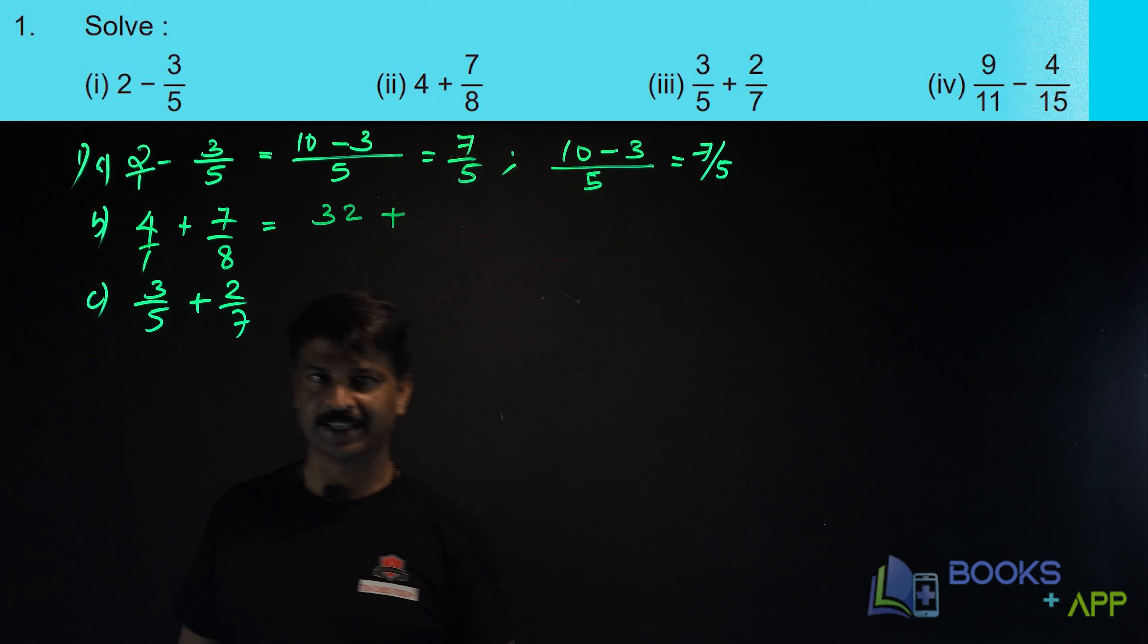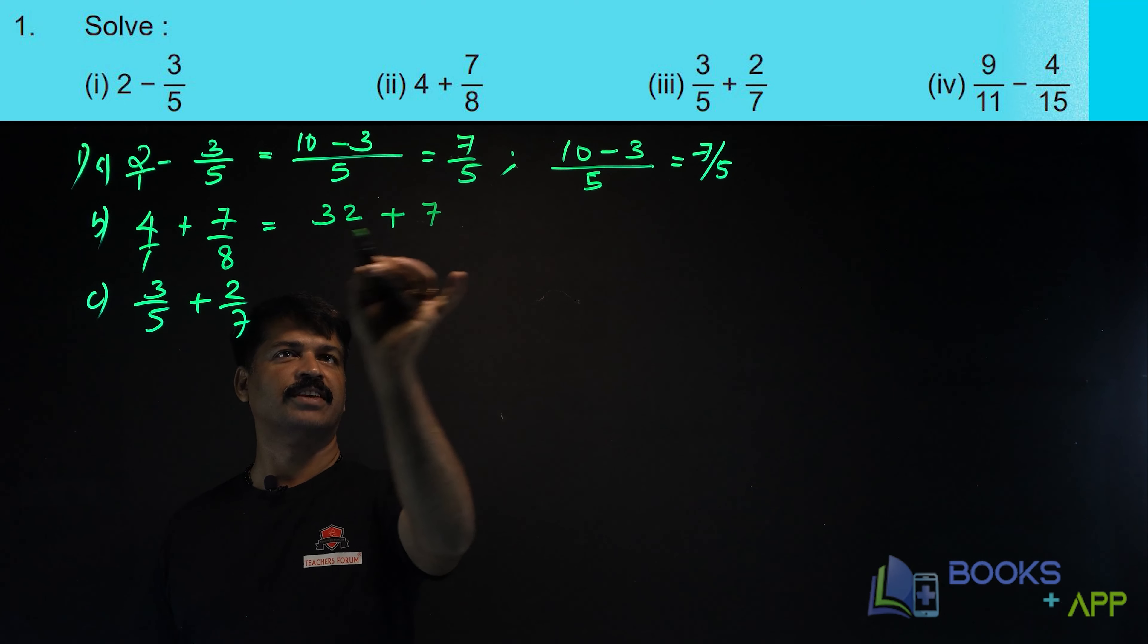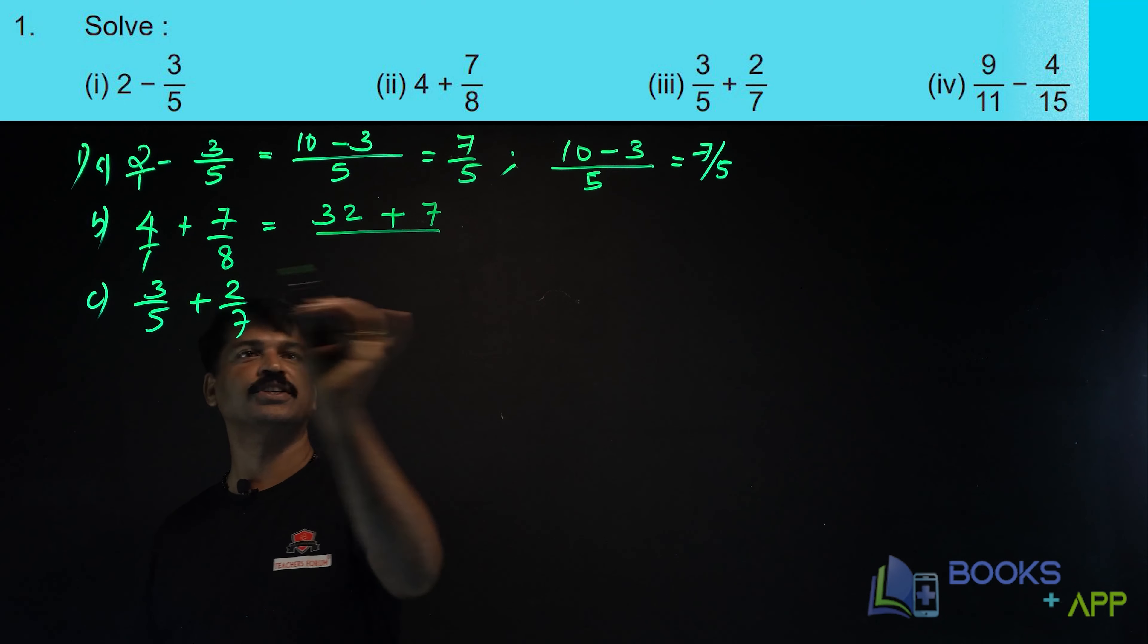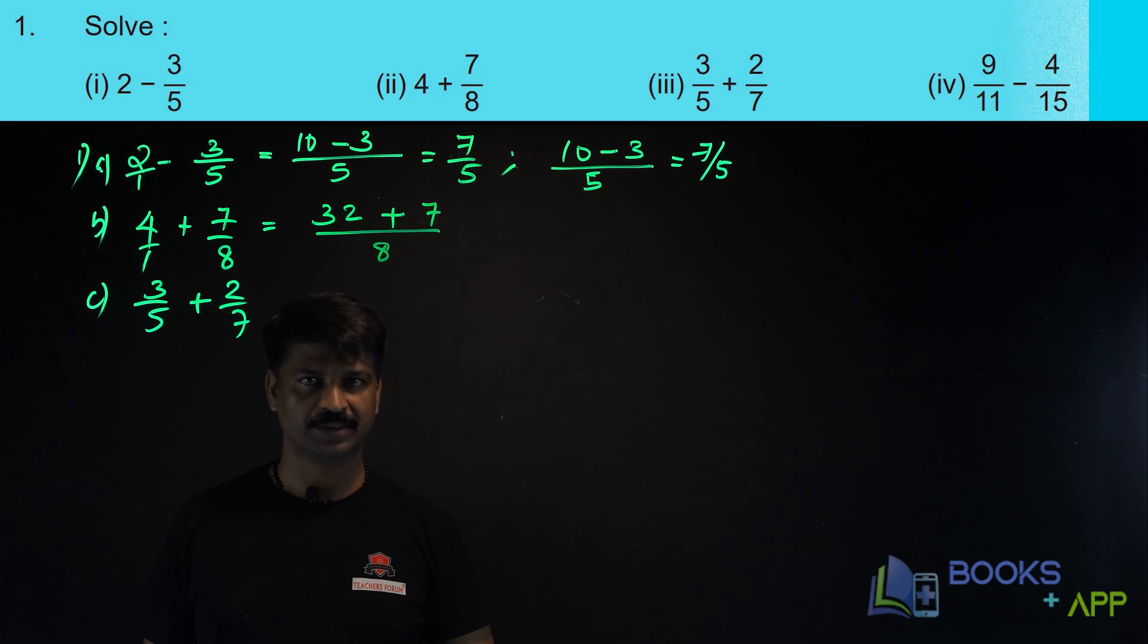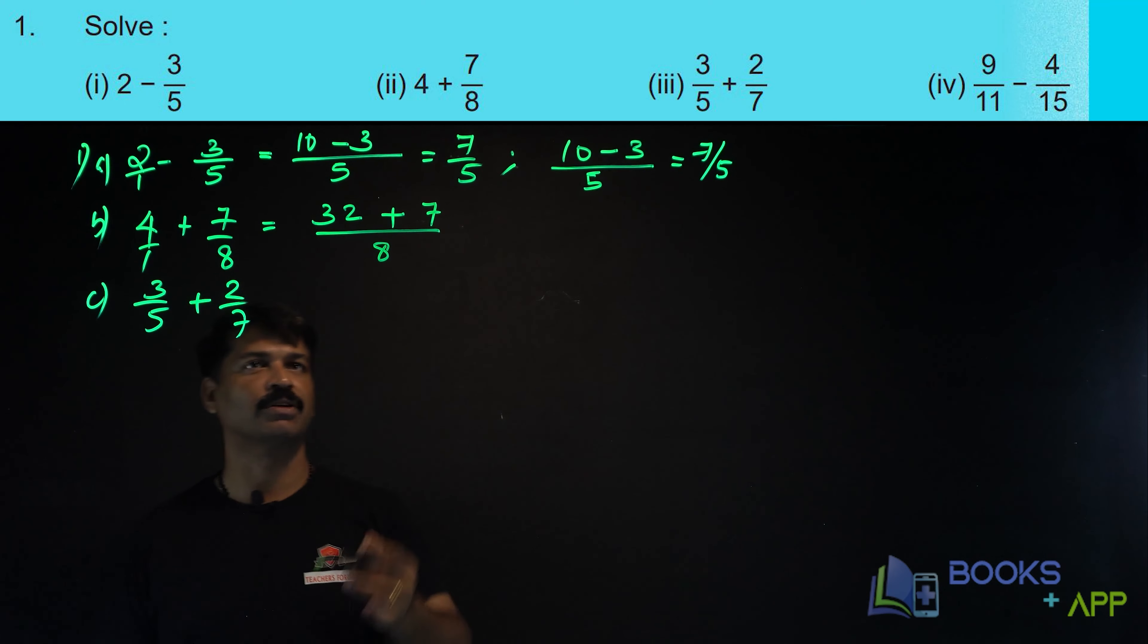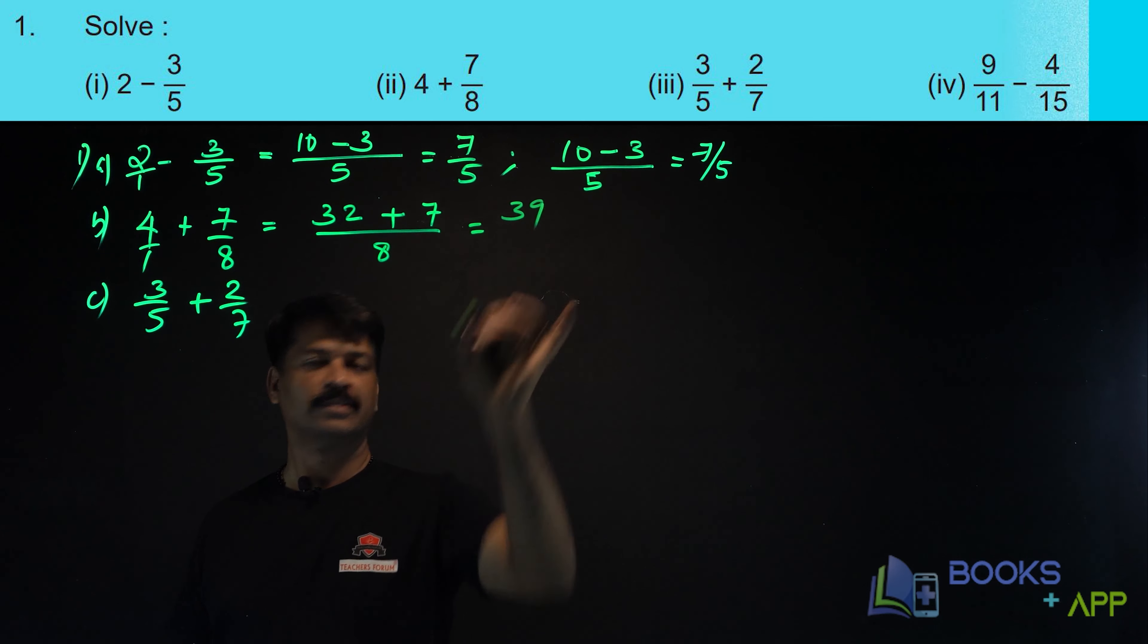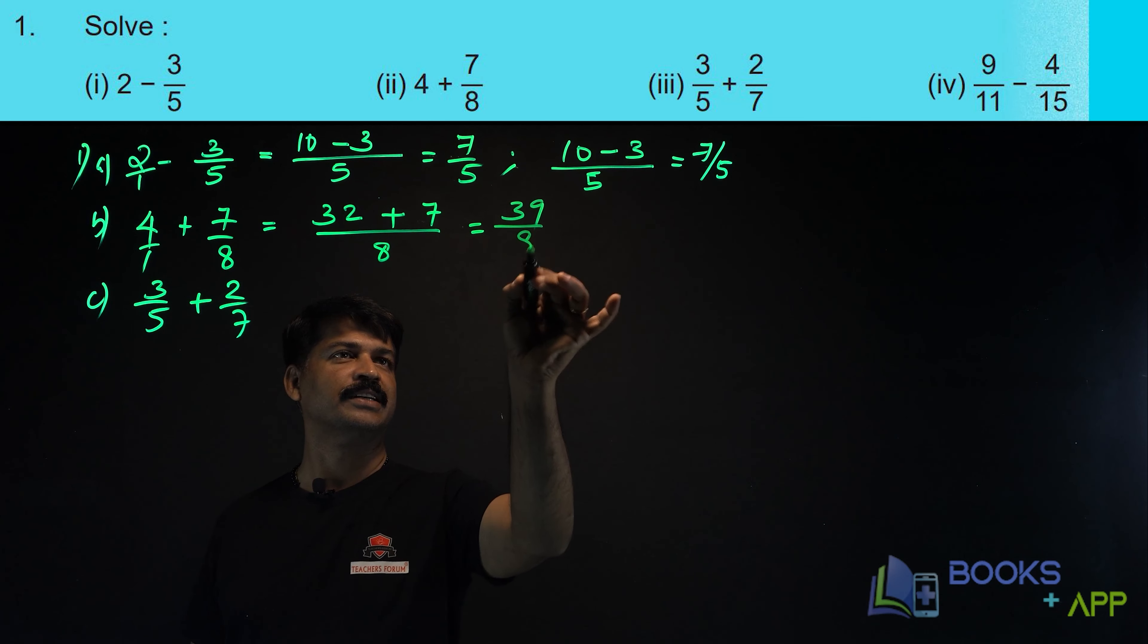If it is minus, you should put minus. Now, 1 into 7, 7 divided by 8 into 1, 8. It is same as what we take, LCM. The same answer. That is equal to 32 plus 7, 39 divided by 8. That is the answer.